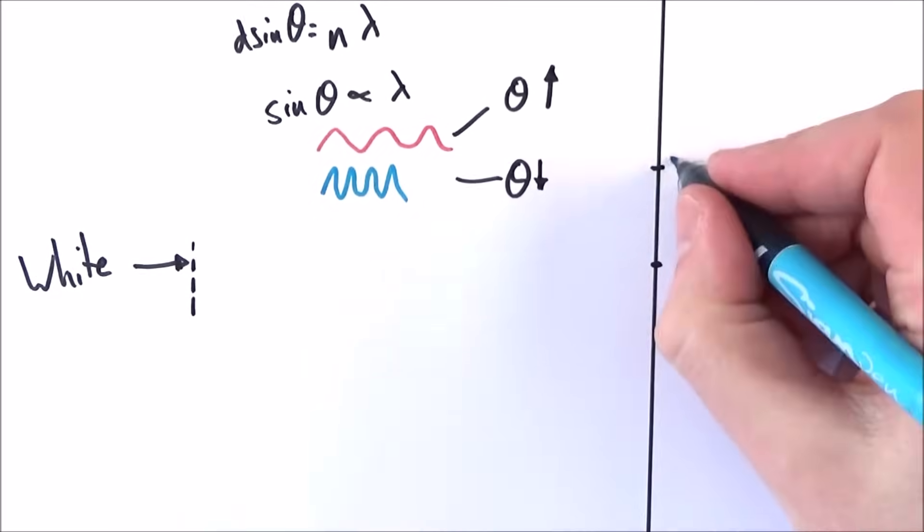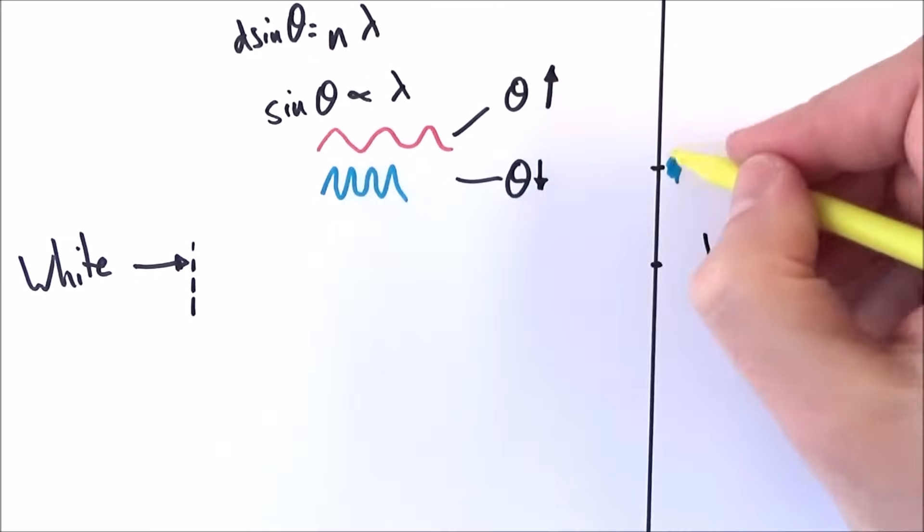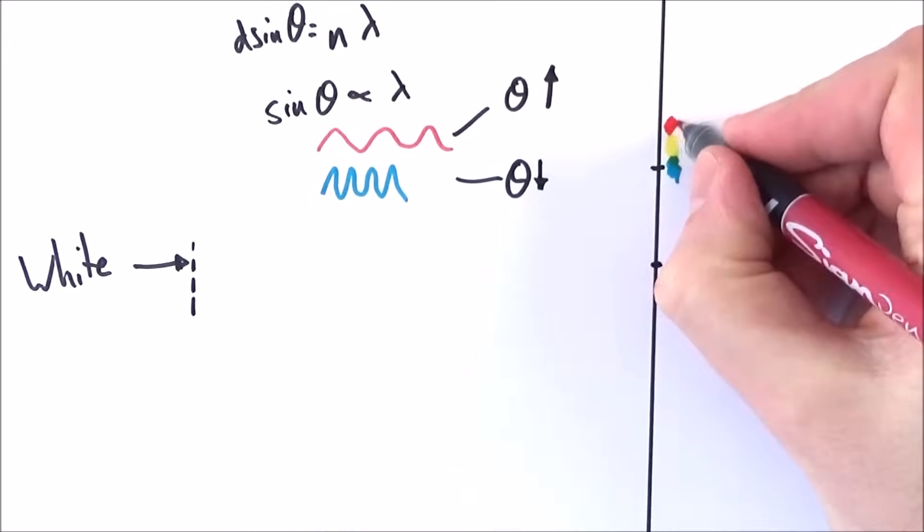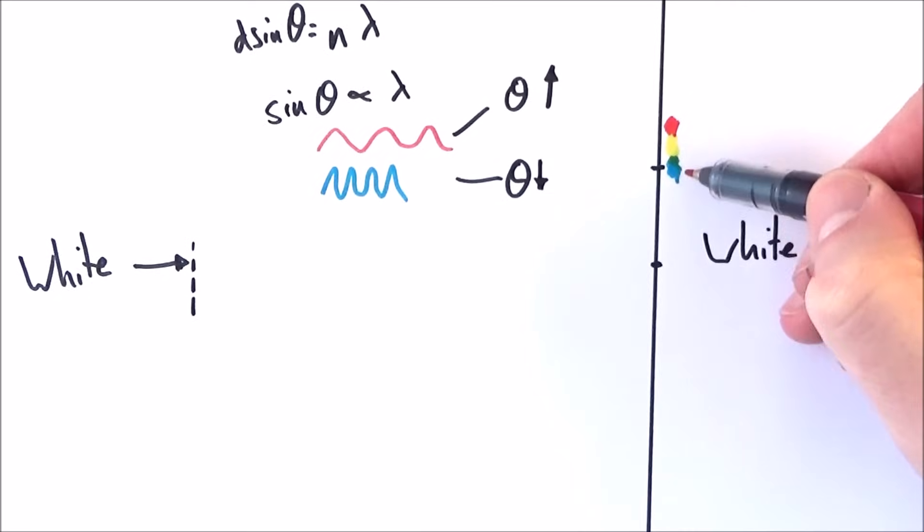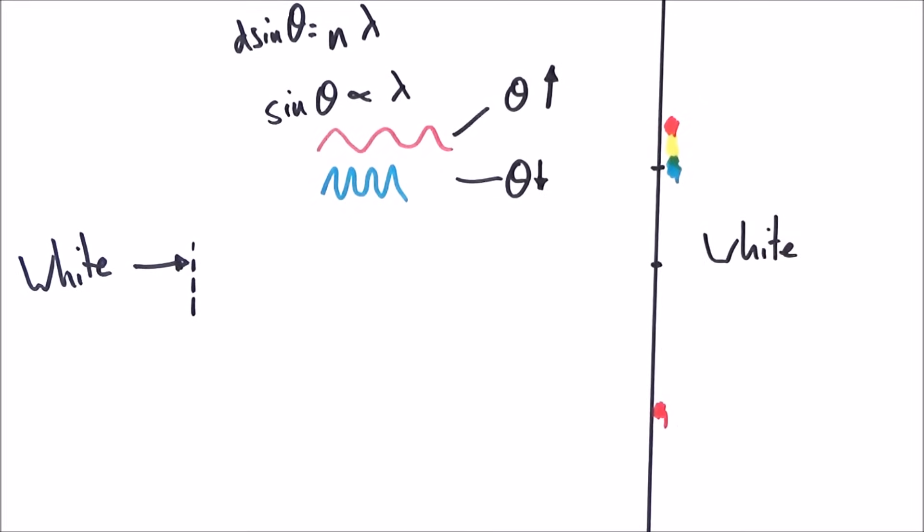What we get is that the light spreads out with the blue and the purple nearest to the white light, and what we get on the other side is the opposite because the blue light doesn't spread out as much as the red. That's what we get for the first order.